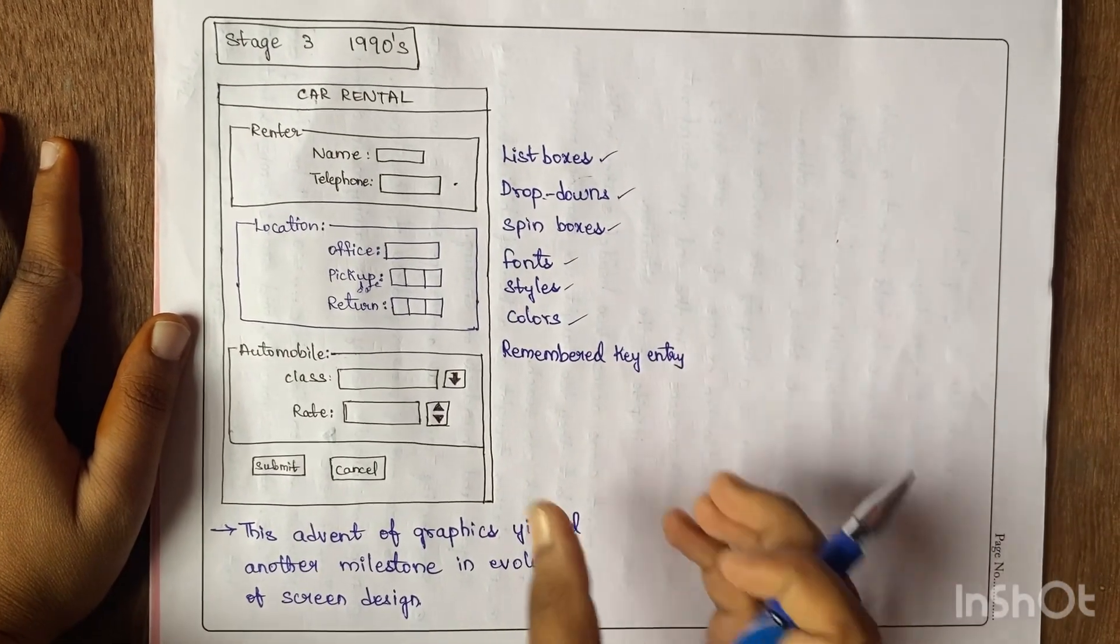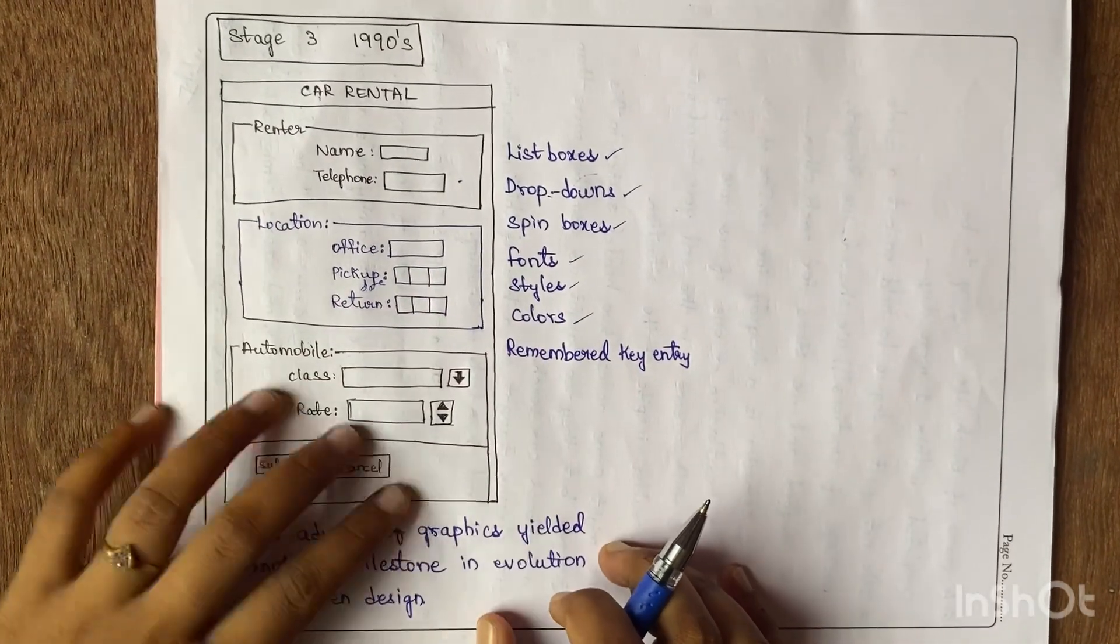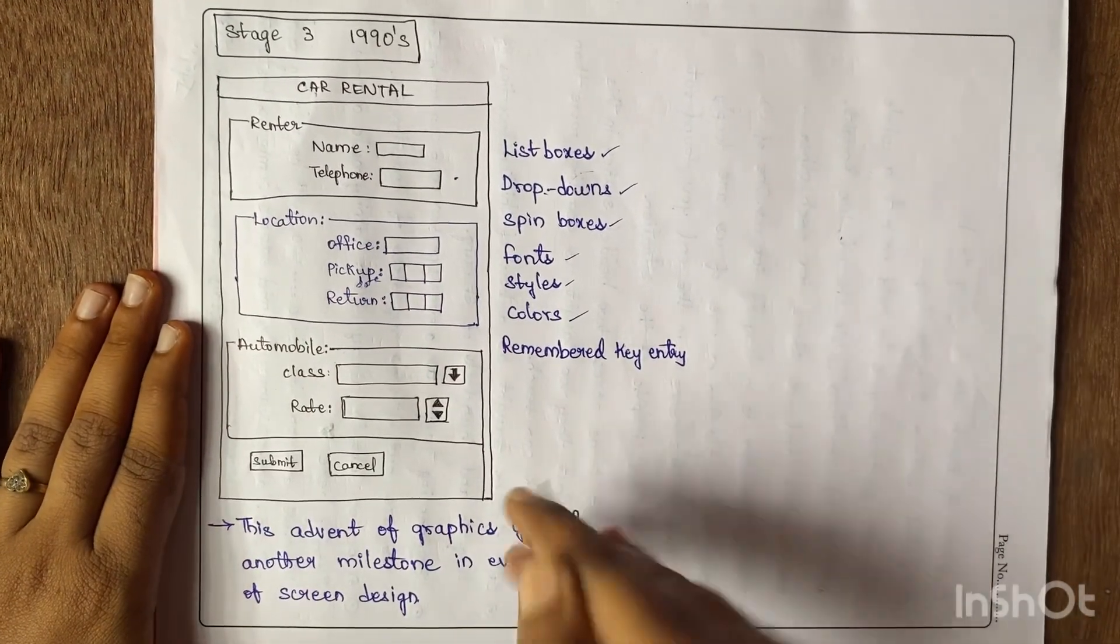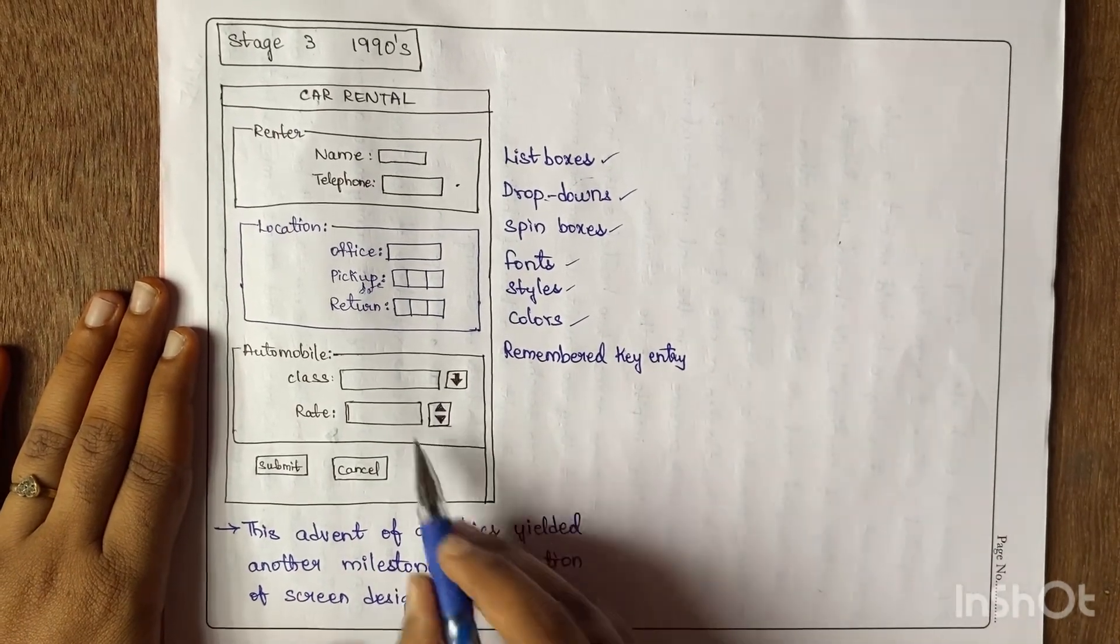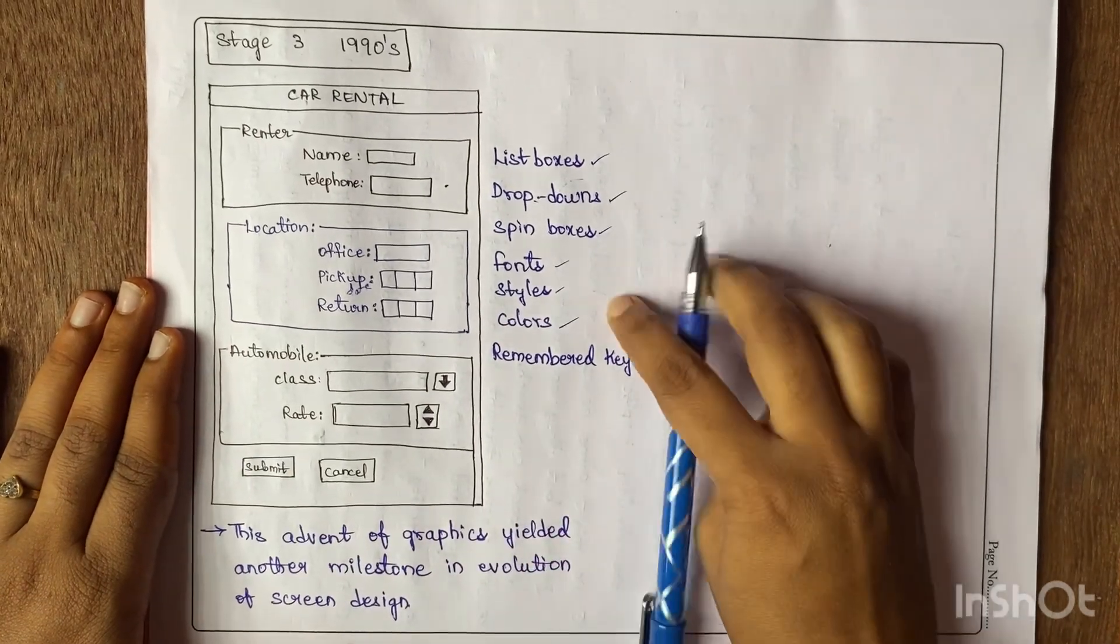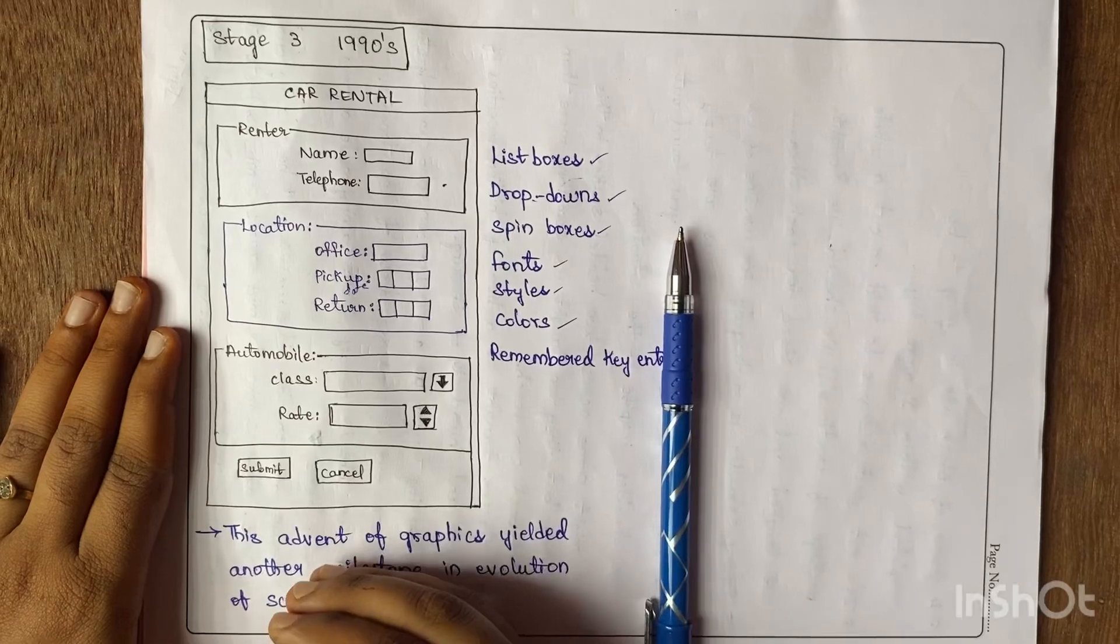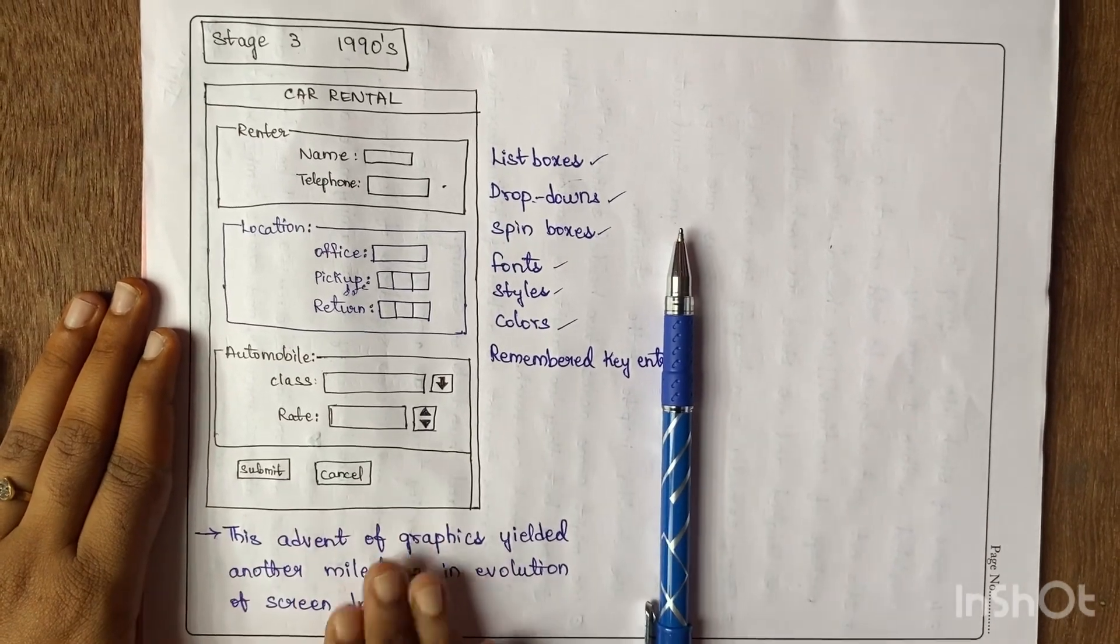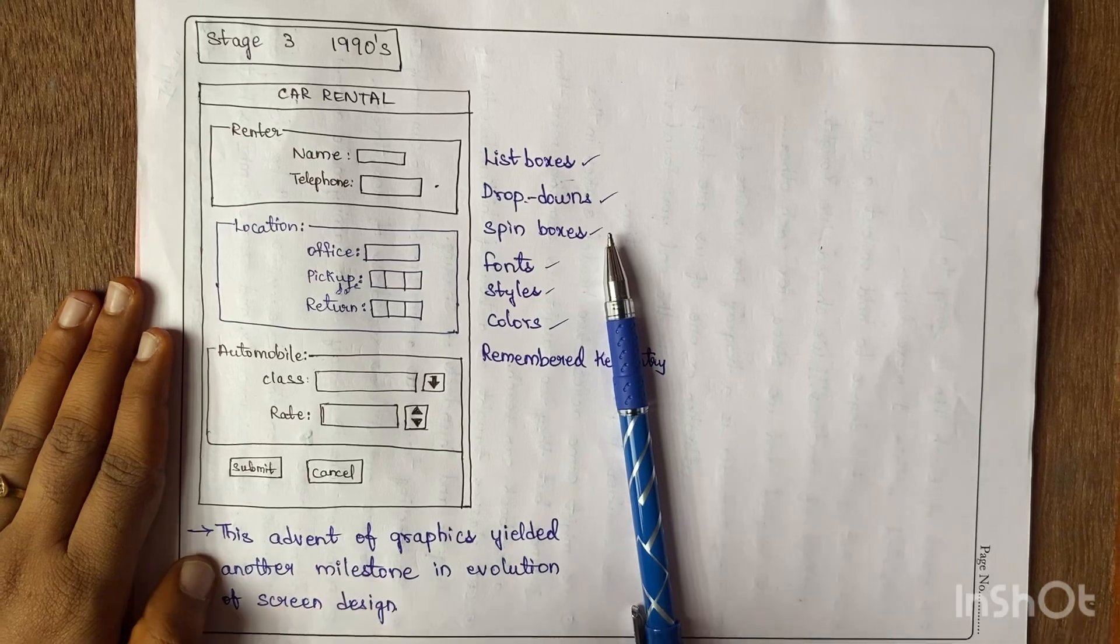styles, colors, and remembered key entry. Previously we needed to remember all commands for everything, but now that was overcome. Very flexible things were implemented here. We have options like Submit and Cancel—previously we didn't have these things. Now we can see separate boxes for everything, which helped people easily use these screen designs. This is one of the